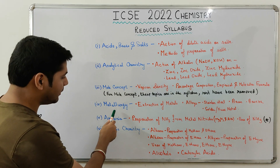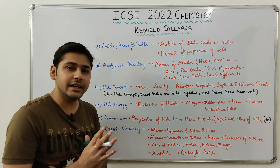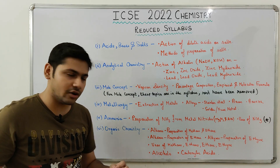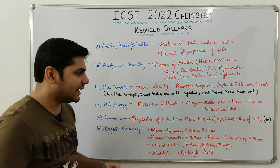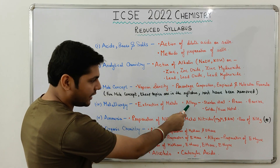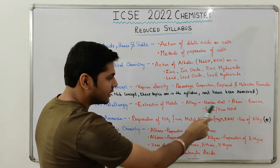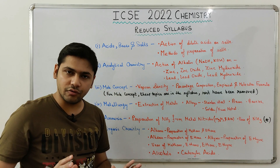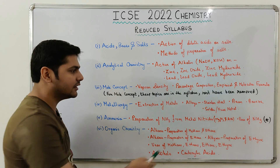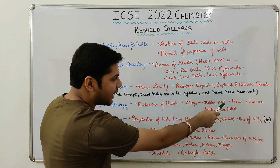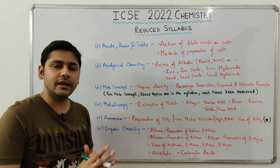Next, from the chapter Metallurgy, Extraction of Metals has been completely removed. So you don't have to study the section of Extraction of Metals from Metallurgy. Secondly, from the section of Alloys, Stainless Steel, Brass, Bronze and Solder Fused Metal have been removed. So in the Alloys section, you don't have to study these four alloys from the chapter Metallurgy.